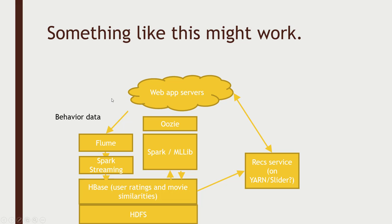The thing we're starting off with is consumer behavior data — what movies are people rating. We need to get that information and store it. As people rate individual movies, maybe we can pick that data up from the web application servers using Flume, just because it has a good integration with the servers we're using. Kafka could work as well. We can dump that into some system to extract the actual behavior data — specifically that customer X rated movie Y N stars — and maybe we can use Spark Streaming for that.